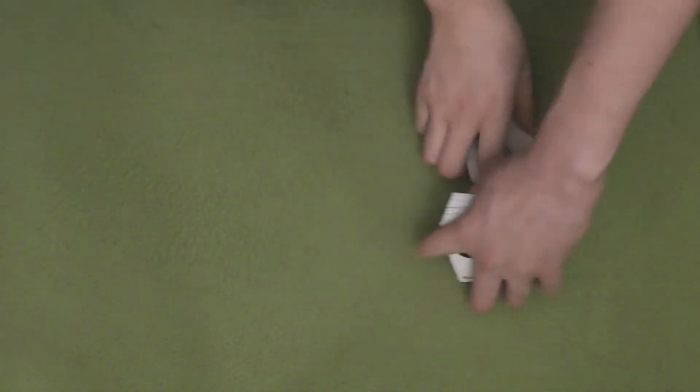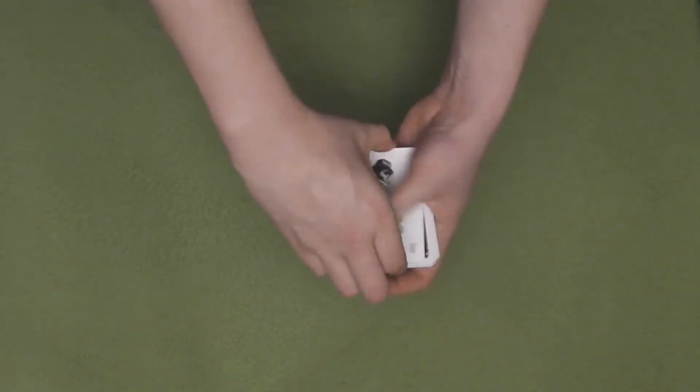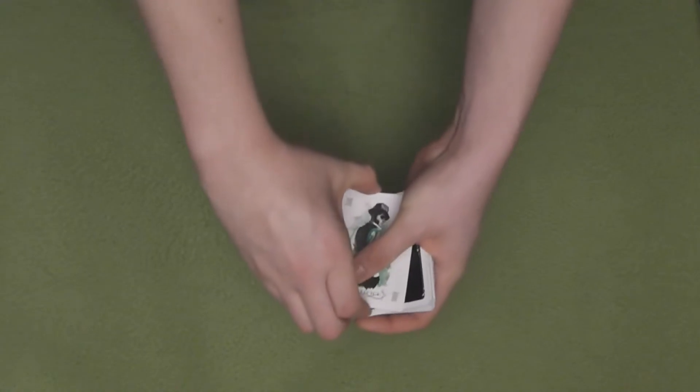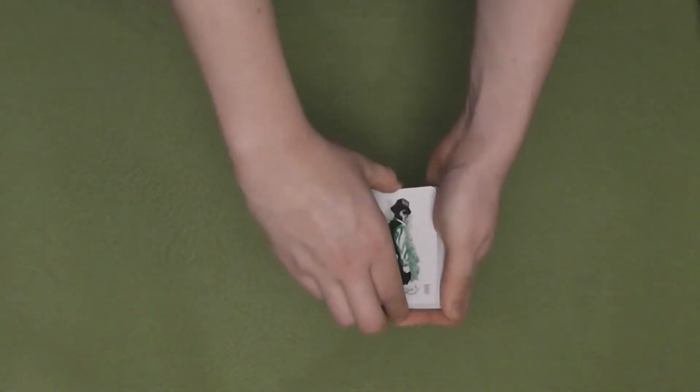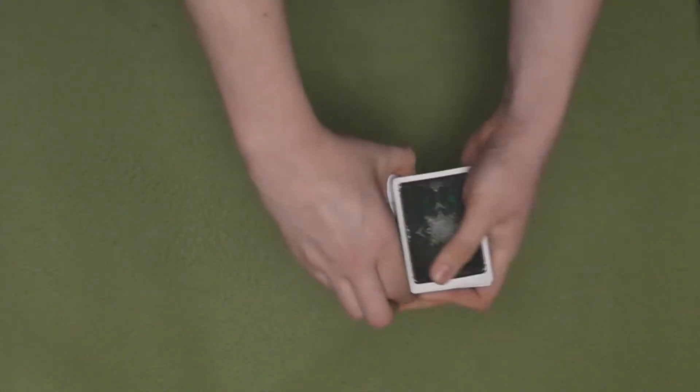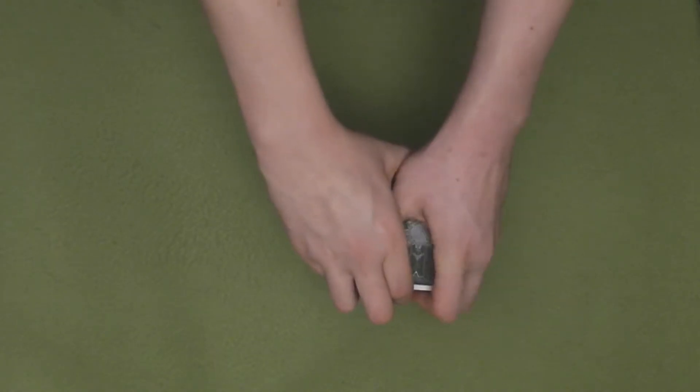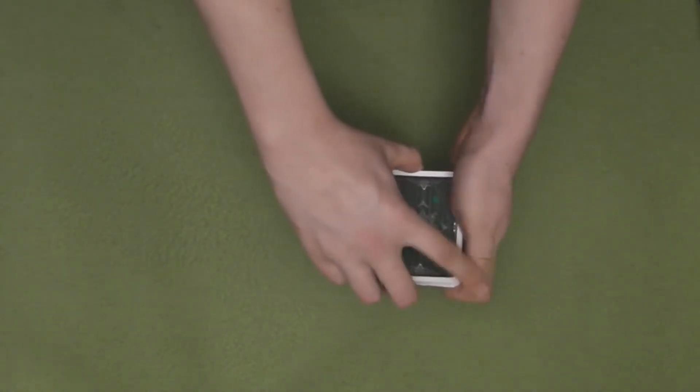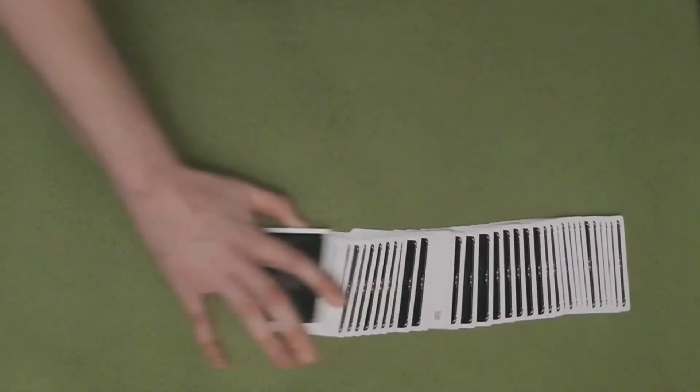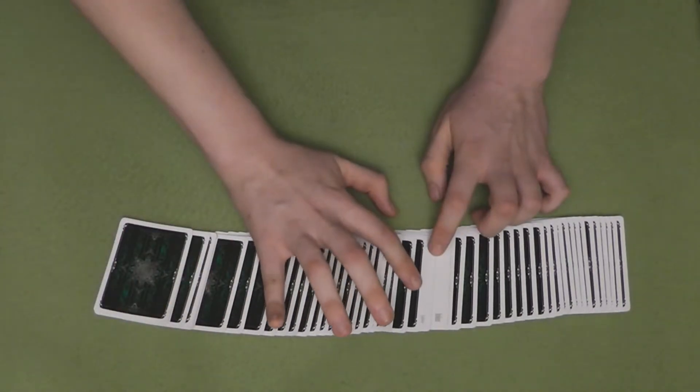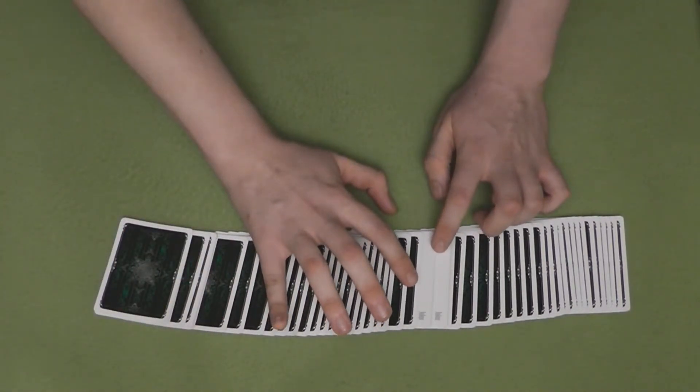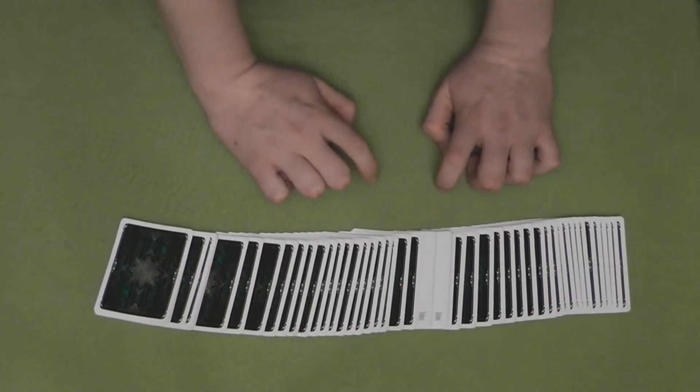Now, I'll take those jokers, and one after another, let them loose into the deck. So, let's see if they have done it again. If I spread the deck, we can see the two jokers. But they haven't found a card. Maybe it was just luck before.